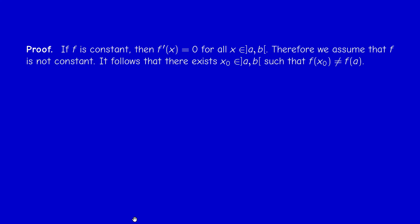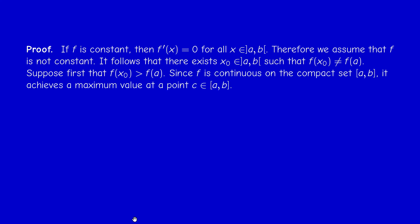This is a consequence of the previous lemma. We distinguish between two cases: F constant and F not constant. If F is constant, there is nothing to prove because the derivative is 0 everywhere. So we assume F is not constant, meaning there is at least one point X₀ inside (A,B) such that F(X₀) ≠ F(A). Suppose F(X₀) > F(A). Since F is continuous on the compact interval [A,B], it must achieve a maximum value at some point C in [A,B].